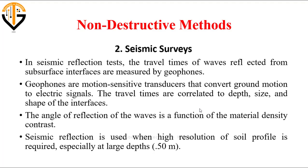The second non-destructive method is seismic surveys, which are of two types: seismic reflection and seismic refraction. In seismic reflection tests, the travel times of waves reflected from subsurface interfaces are measured by geophones. These waves travel through the interfaces of the soil. Geophones are motion-sensitive transducers that convert ground motion to electrical signals, used to determine the depth, size, and shape of the interfaces. The angle of reflection is a function of material density contrast.